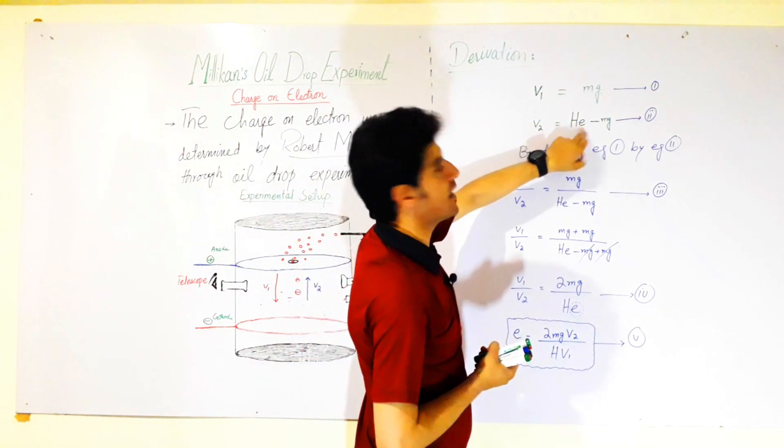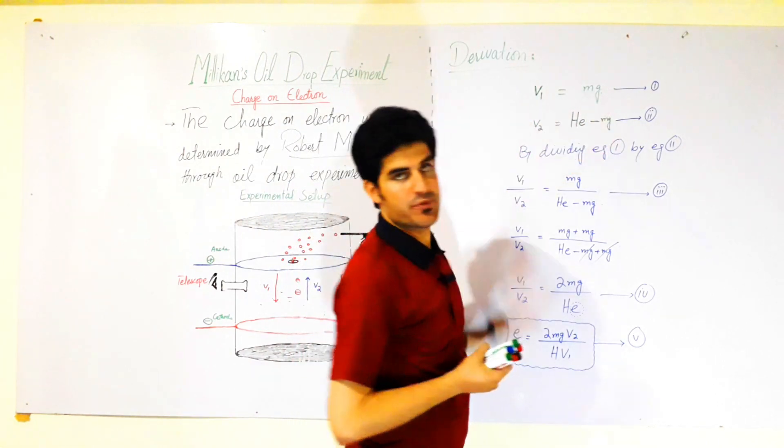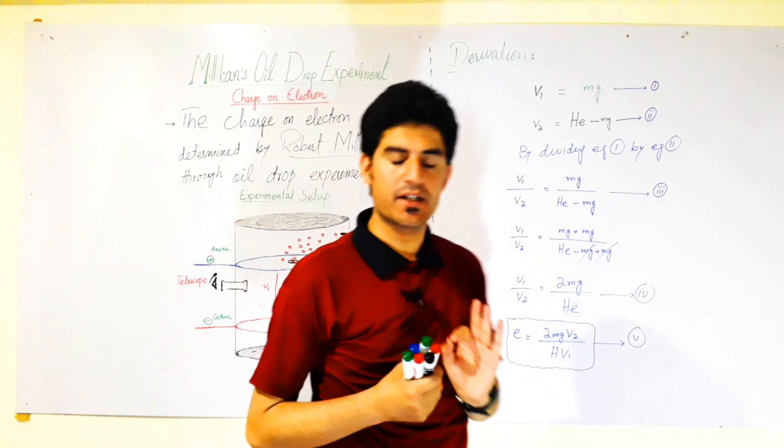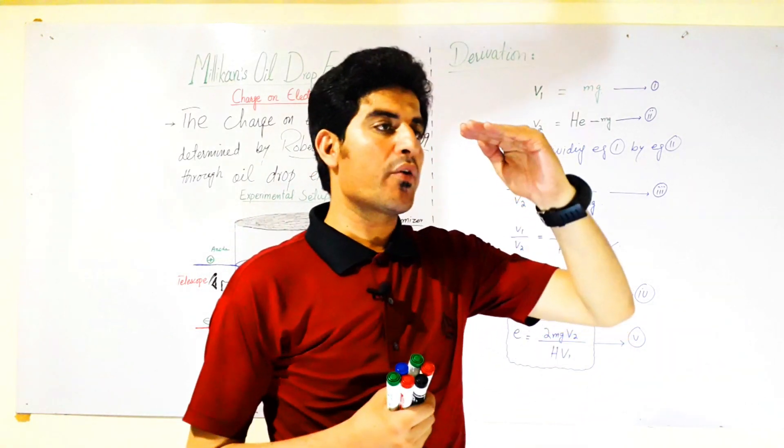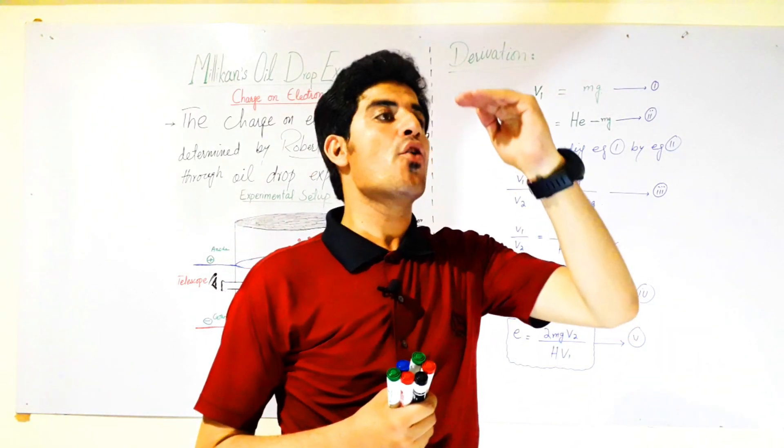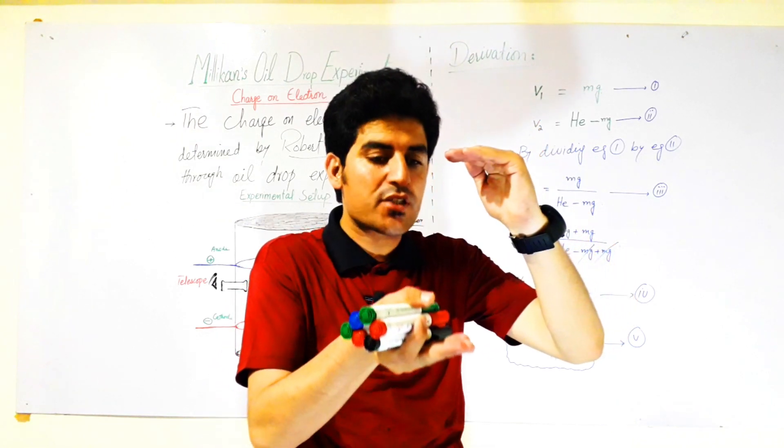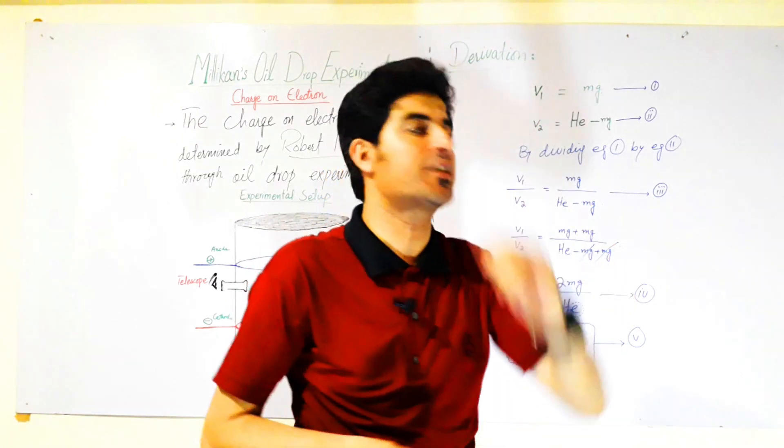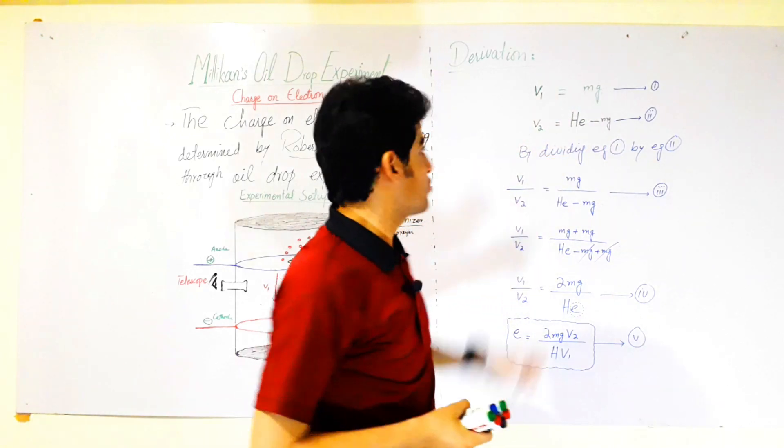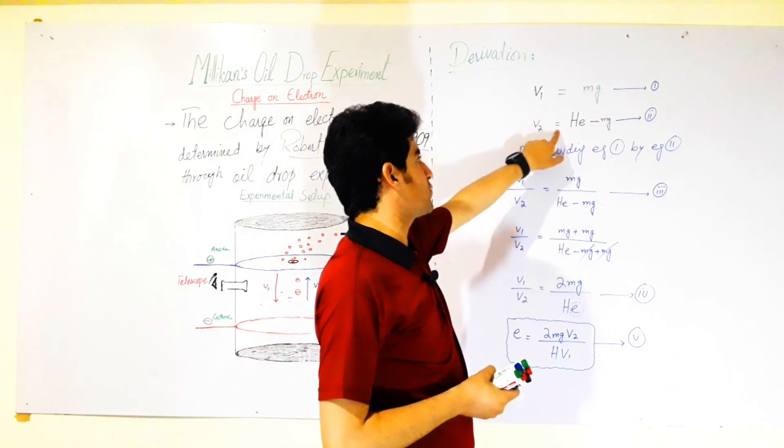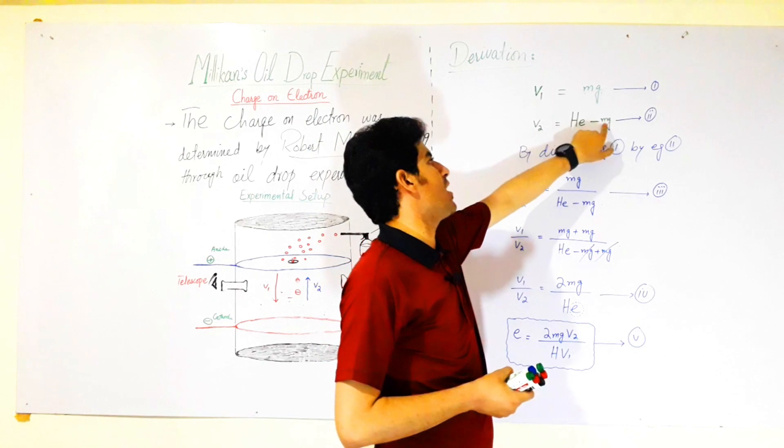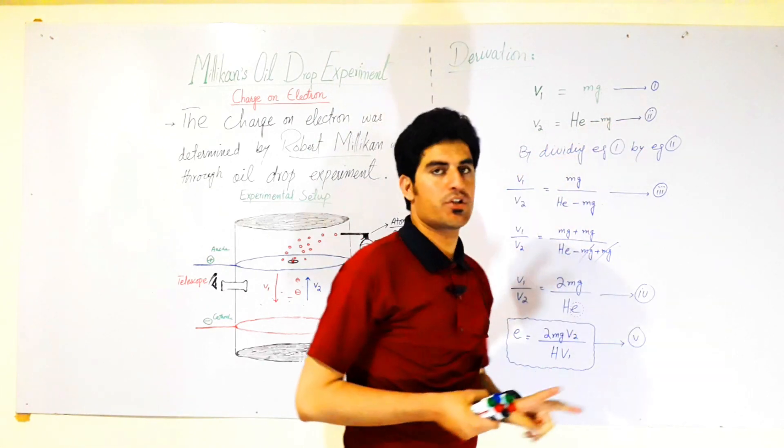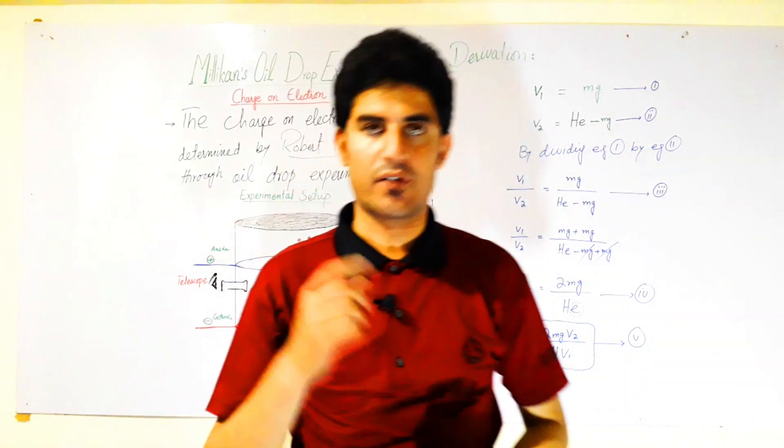...is qE minus mg. Minus mg is there because the gravitational force decreases the velocity due to the electric field. So we're taking minus mg. This is your equation number two.